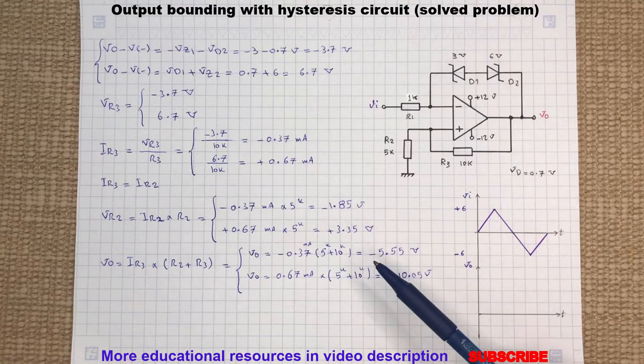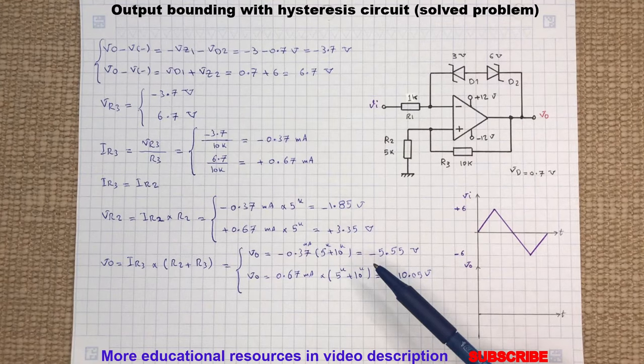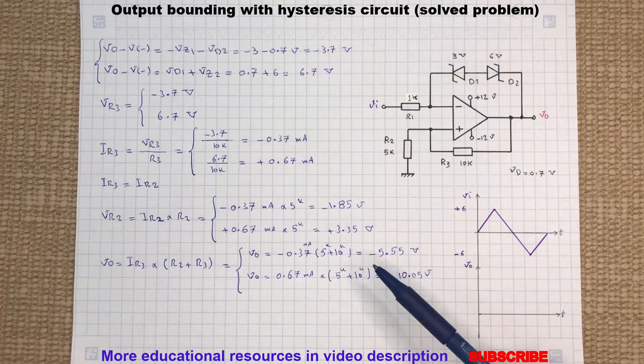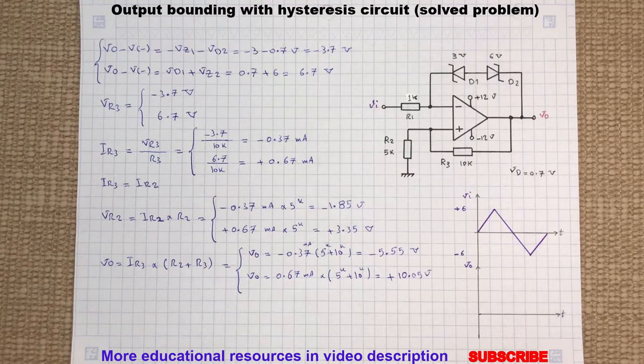Until the inverting terminal gets to the minus 1.85 volts or less, which then the output voltage will swing to the positive high and will be limited at the positive 10.05 volts. Then the output state won't change until the inverting input gets to the positive 3.35 volts or higher again. So the trigger points will be.